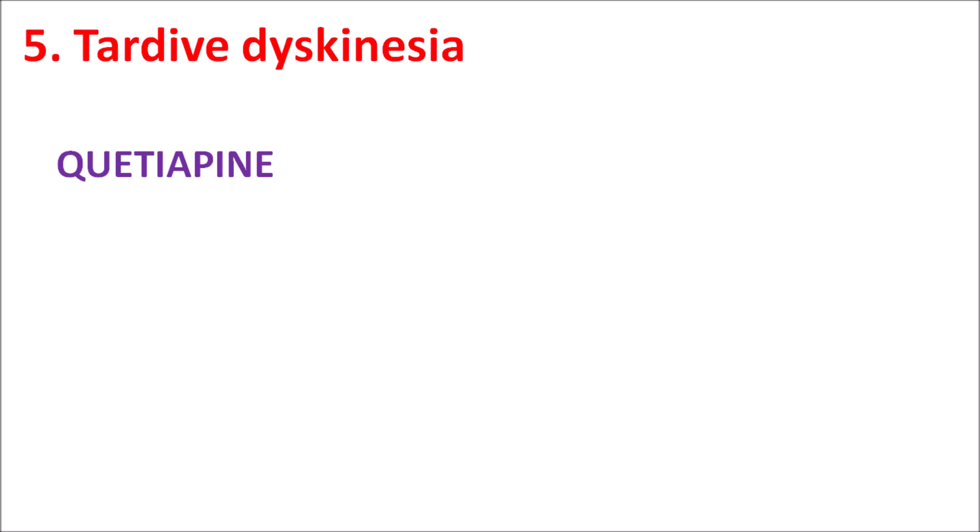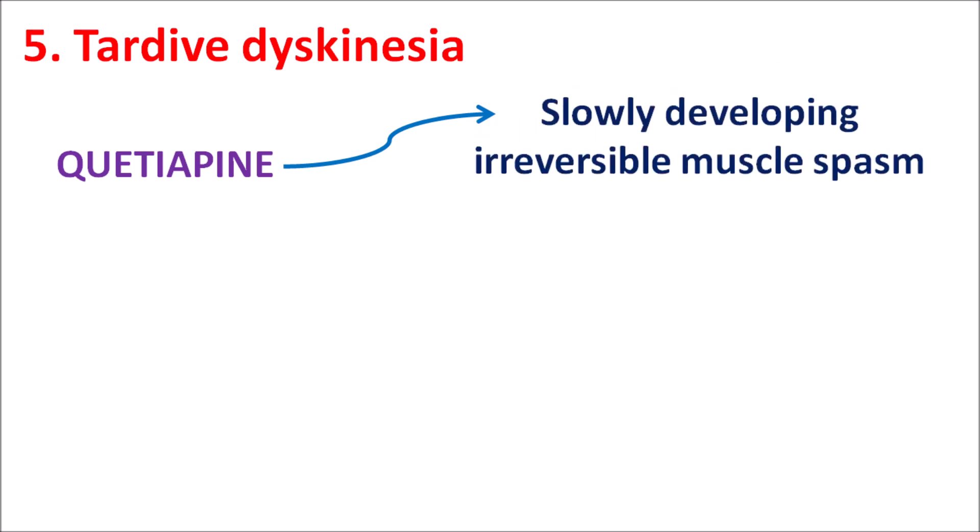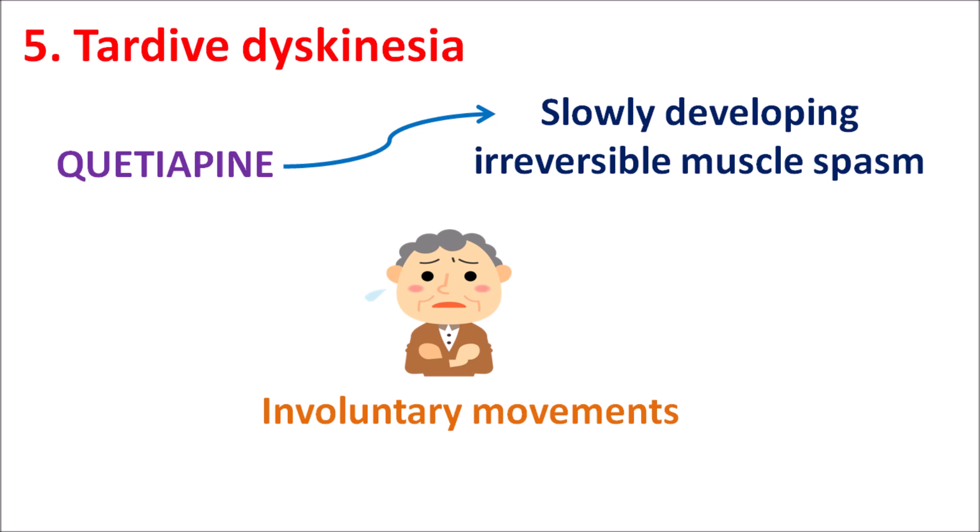The fifth precaution is tardive dyskinesia, an extrapyramidal side effect that can be observed with Quetiapine. Although this drug produces somewhat fewer extrapyramidal side effects compared with typical antipsychotics, it can still produce tardive dyskinesia on long-term use — slowly developing irreversible muscle spasms observed after at least four months of treatment. In this condition, involuntary movements, jerky movements, and muscle spasms are seen, which are irreversible in nature. If such irreversible muscle spasms are observed, the drug should be stopped to avoid further development of tardive dyskinesia.